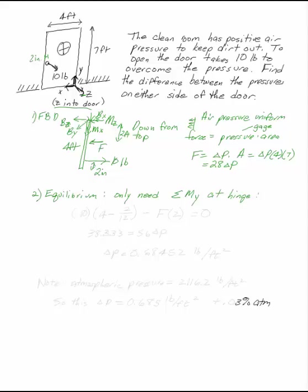So at the hinge, I have this 10-pound force acting at a distance of 4 feet minus 2 inches away from the hinge. I also have my air pressure force acting at a distance of 2, and they're acting in the opposite direction. This gives me 38.333 equals 56 delta P. Delta P is 0.68452 pounds per foot squared.